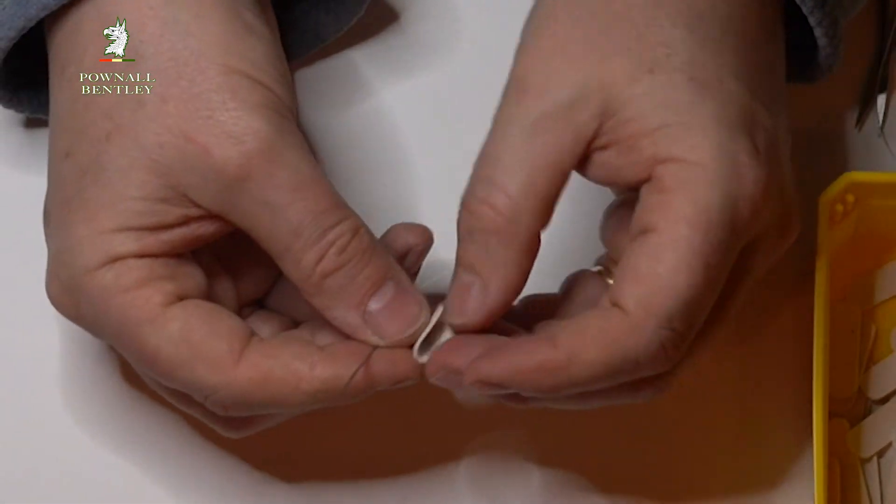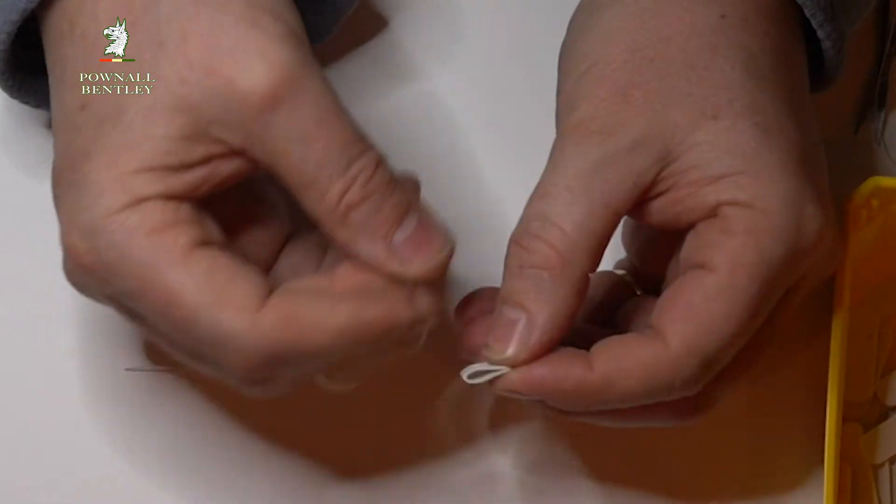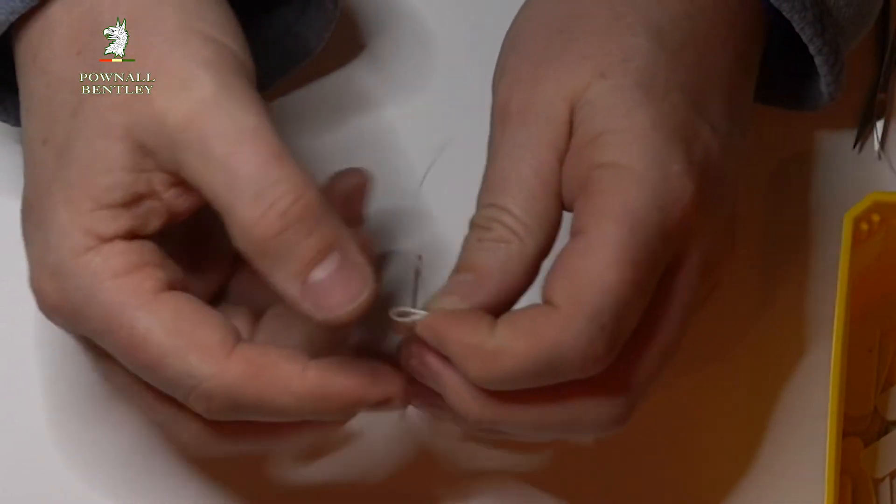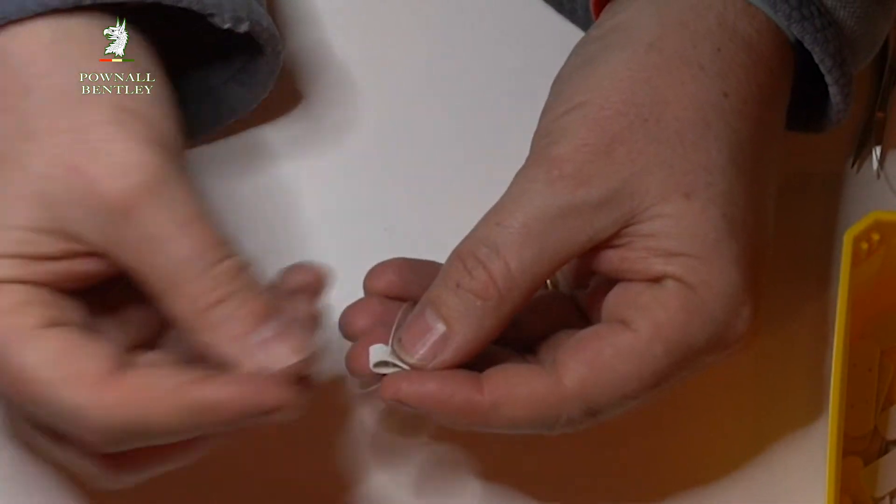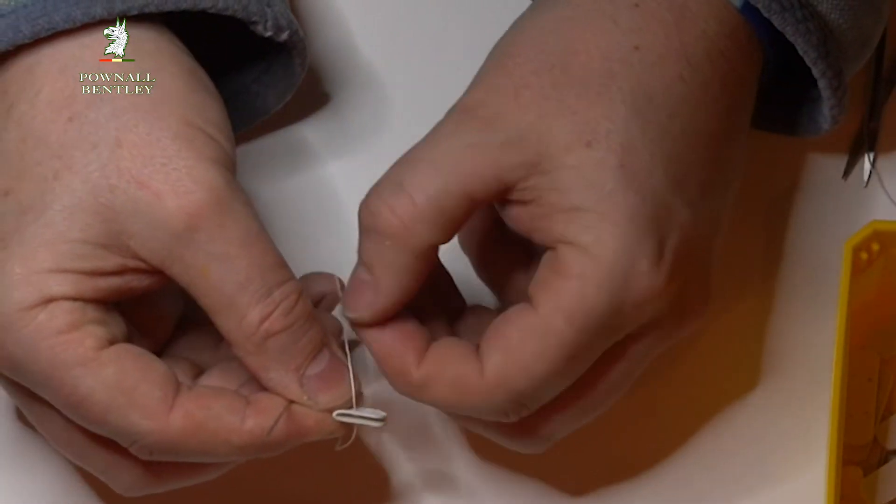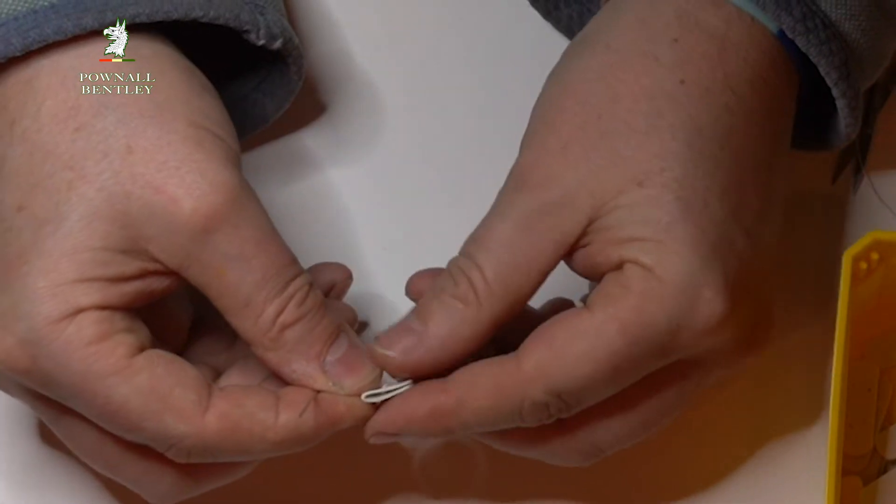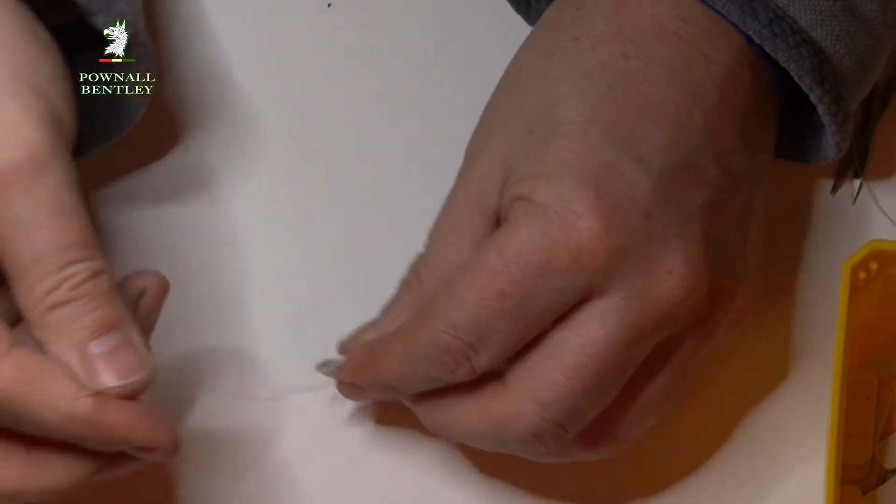So I fold the leather over and I just go sort of up from the bottom, either side can be the bottom and start, and pull the thread through. But I hang on to a fair bit at the end there just so I can tie things off easily.